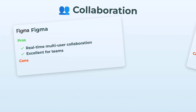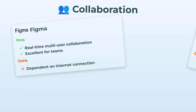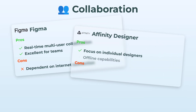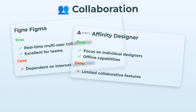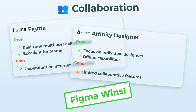On to collaboration, and this is Figma's home turf. Real-time multi-user collaboration — it's almost magical watching your teammates move stuff around as you're working. Literally built for teams. Of course, it does depend on having a good internet connection, so offline work isn't its strong suit. Affinity Designer, on the other hand, is more of a lone wolf — great for solo designers with offline capabilities. But if you're hoping for instant group edits or brainstorms, it's just not happening here. Figma definitely wins this round, hands down.